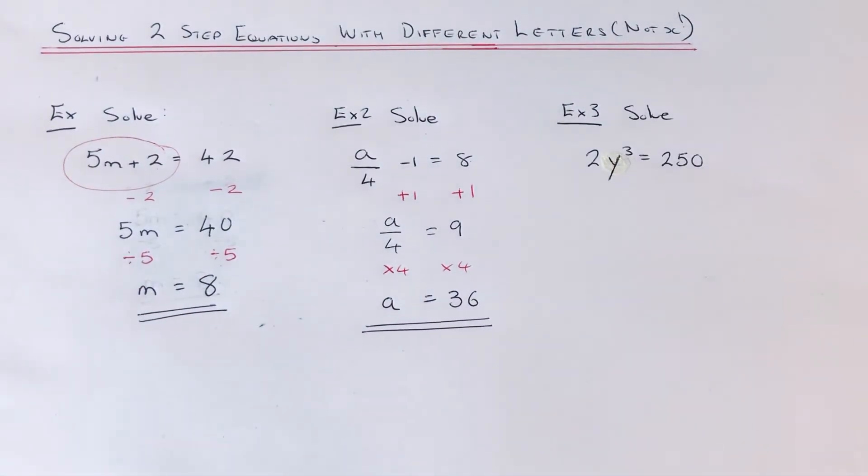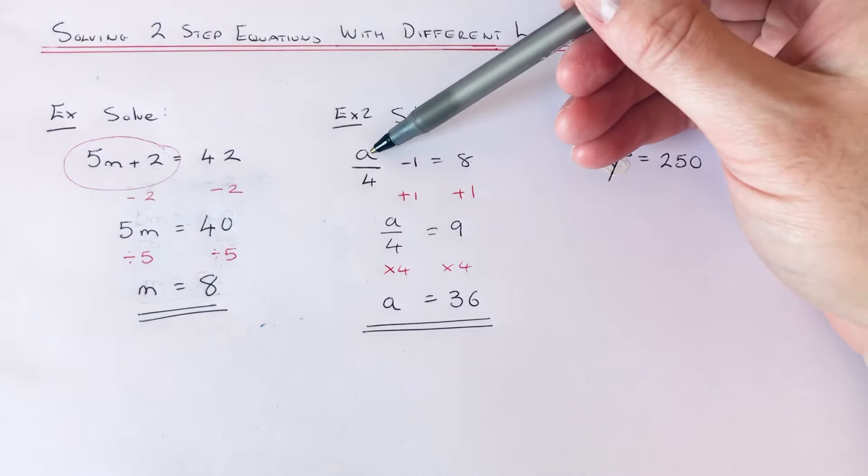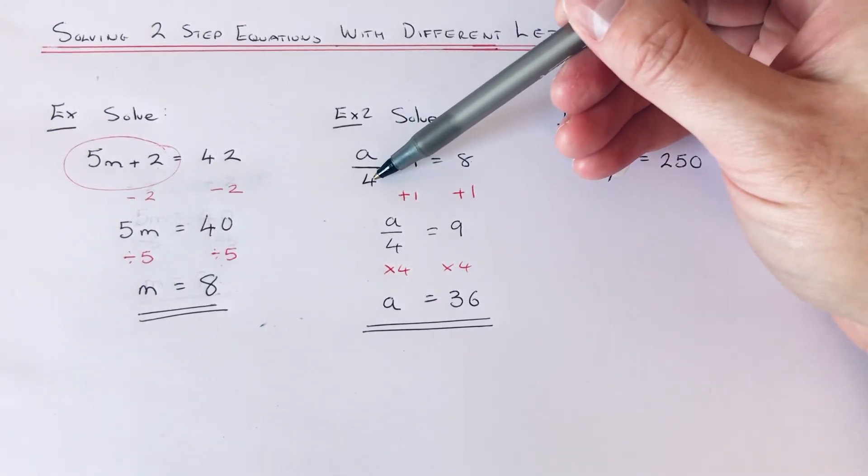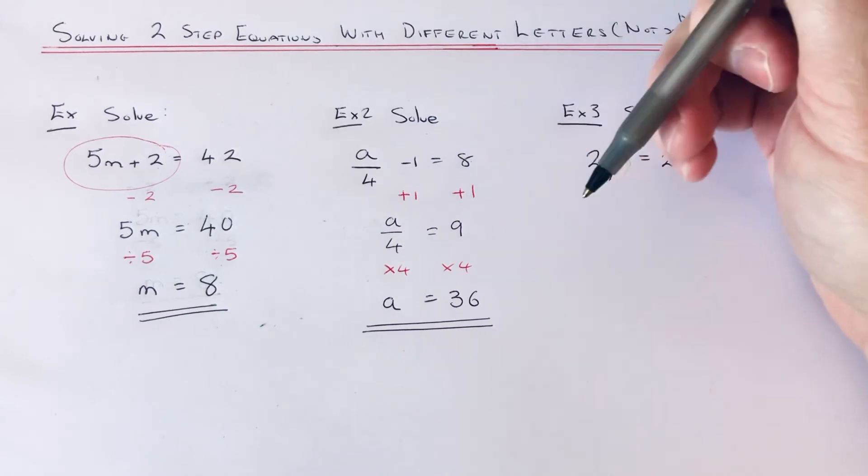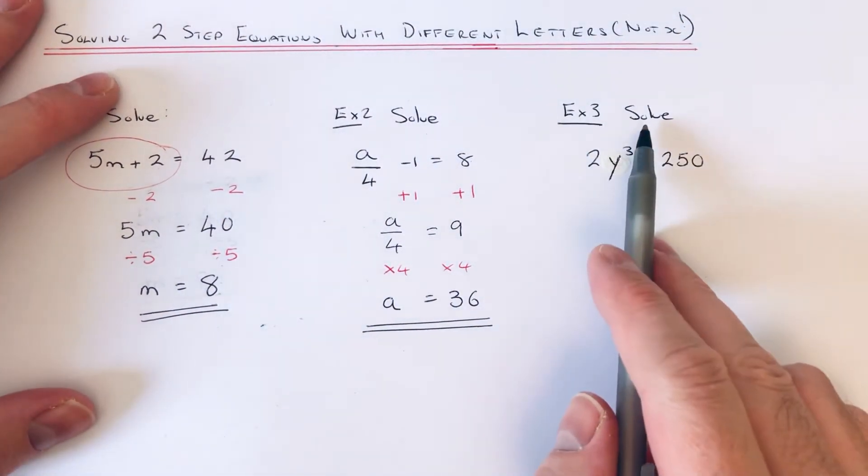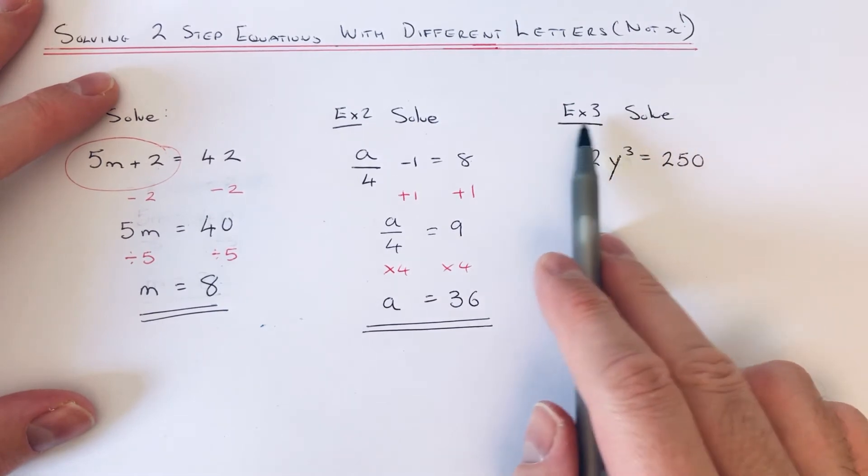Again, let's just check that by putting it back into the original equation. So 36 divided by 4 is 9. 9 take away 1 is 8. So the answer is correct. So let's have a look at example 3. So this one's a difficult one.